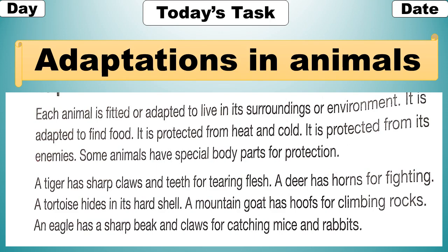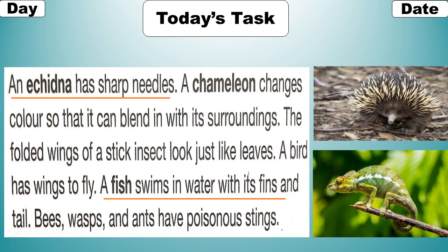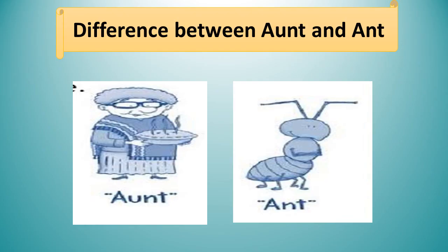An echidna has sharp needles on its body. A chameleon — called girgit — changes color so that it can blend in with its surroundings. The folded wings of a stick insect look just like leaves. A bird has wings to fly. A fish swims in water with its fins and tail. Bees, wasps and ants have a poisonous sting.